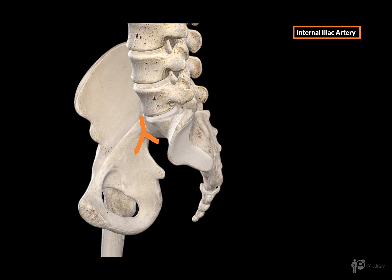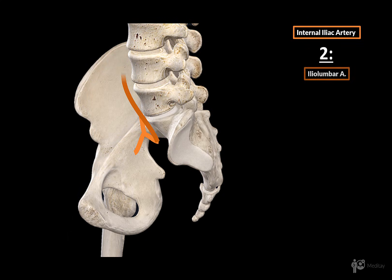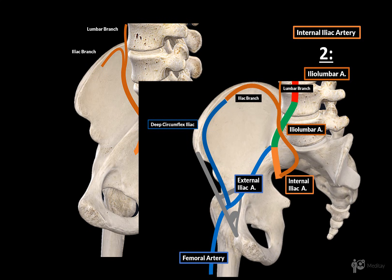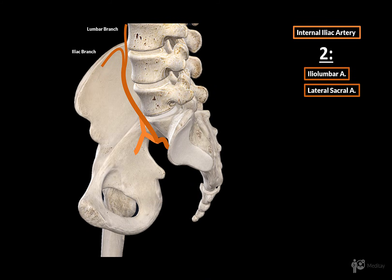The first one is the iliolumbar artery. It ascends and then eventually divides into two branches: the lumbar branch, which supplies the muscles of the posterior wall of the abdominal cavity, and the iliac branch, which passes along the iliac crest and supplies the muscles of the anterior wall of the abdominal cavity. The iliac branch will anastomose with the deep iliac circumflex artery of the external iliac.